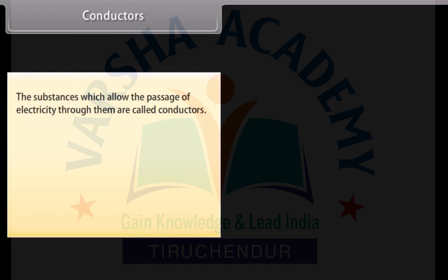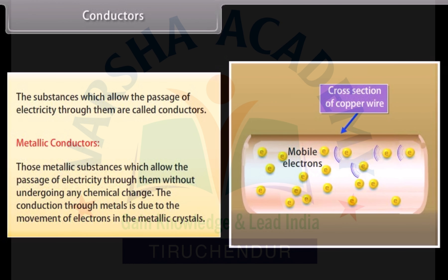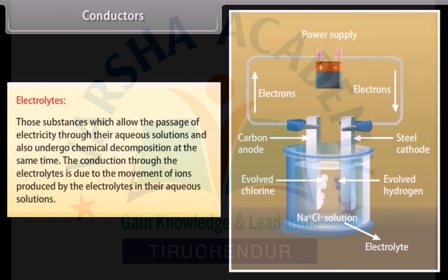Conductors: Substances which allow the passage of electricity through them are called conductors, classified into two categories. Metallic conductors allow passage of electricity without any chemical change; conduction is due to movement of electrons in metallic crystals (e.g., copper and silver). Electrolytes allow passage of electricity through their aqueous solutions while undergoing chemical decomposition; conduction is due to movement of ions in aqueous solutions (e.g., acids and bases).